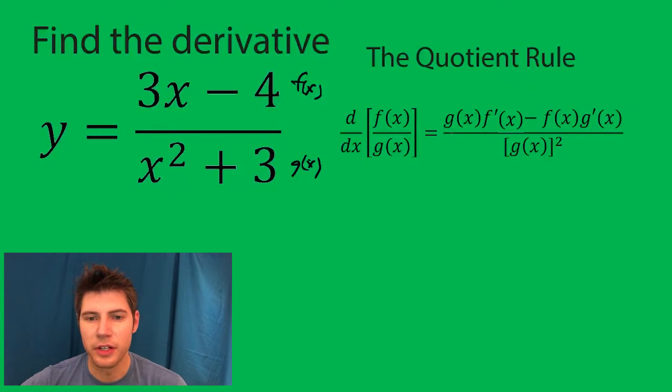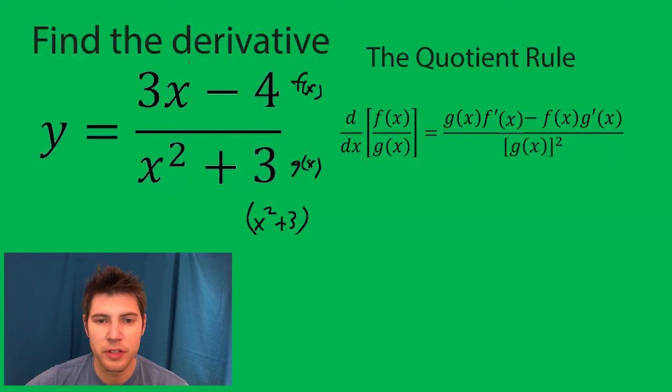So now we just plug stuff in. g of x is what's on the bottom so it's just gonna be x squared plus 3. And I like to keep it in parentheses because we're gonna multiply it by everything that's right here. f prime of x is the derivative of this. The constant goes away so we're left with just a 3. Then subtraction sign.